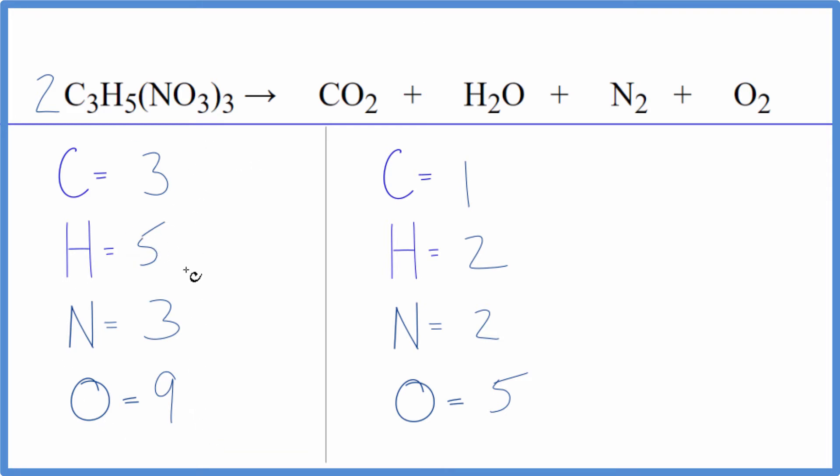When I do that I have to update all these numbers here. So now I have three times two, six carbons, five times two, that gives me ten hydrogens, so now that's an even number. Then three times the one, three nitrogens times two, so I get six of those. Then three times three is the nine times two, that gives me 18.